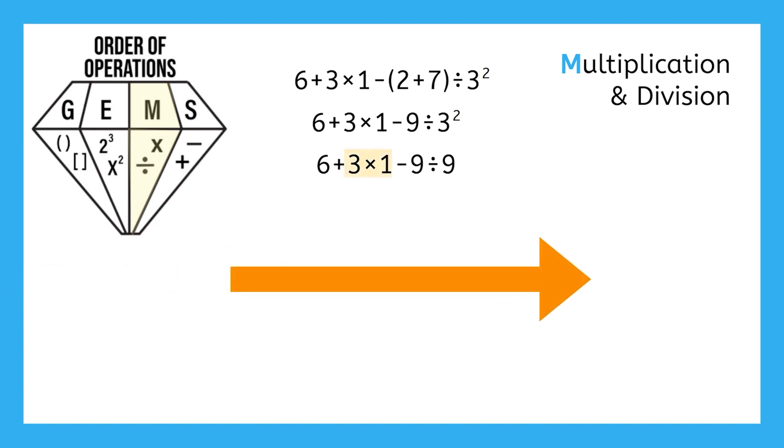Here we have three times one, and nine divided by nine. Working from left to right, three times one equals three, and nine divided by nine equals one. Bring down any unsolved pieces of the expression, and this leads us to the final letter in GEMS, S for subtraction and addition.